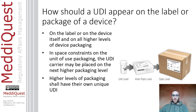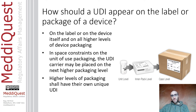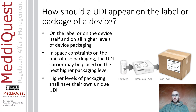The UDI carrier shall be on the label or on the device itself and on all higher levels of device packaging. Normally the code should be visible to the person using the product. In the event of significant space constraints on the unit of use packaging, the UDI carrier may be placed on the next higher packaging level. Higher levels of packaging shall have their own unique UDI, and shipping containers shall be exempt from this requirement.